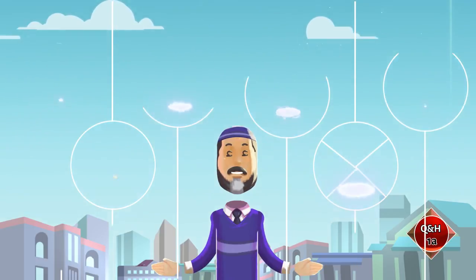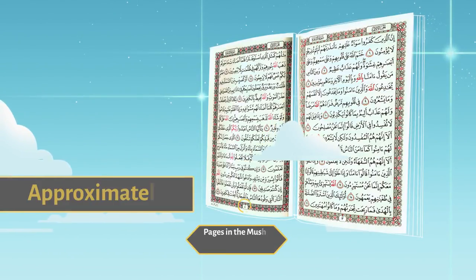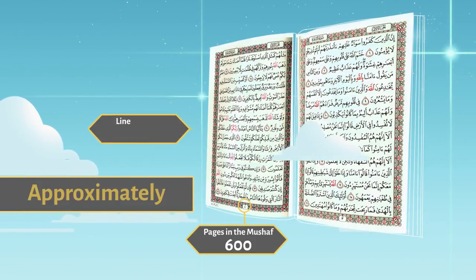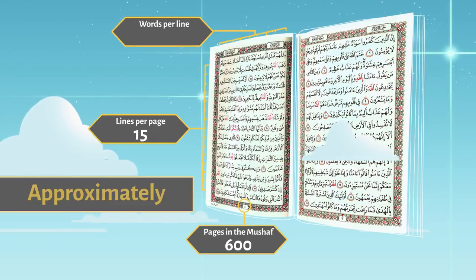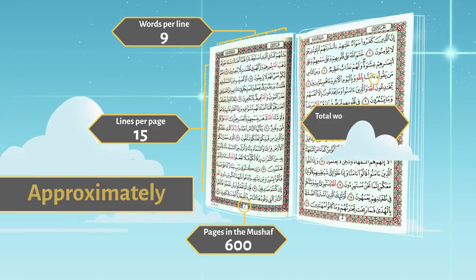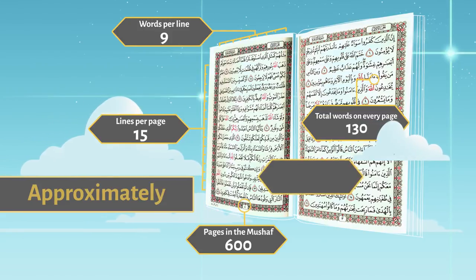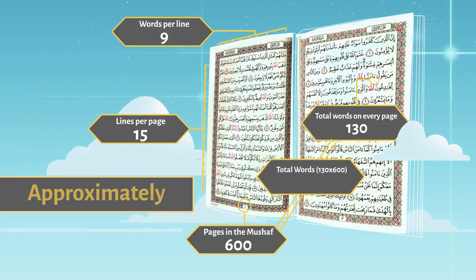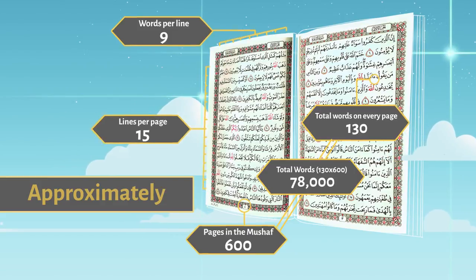In the most commonly printed Quran copy, pages in the Mus'haf are 600, lines per page 15, words per line 9, total words on every page 130, and total words approximately are 78,000 in the Quran.